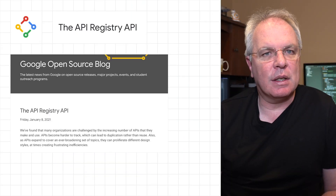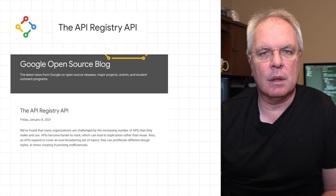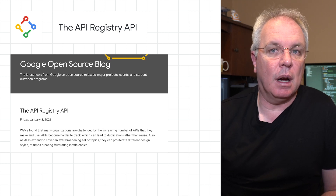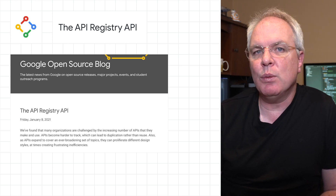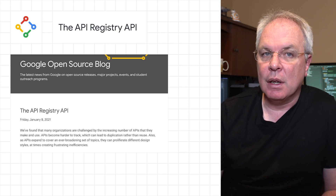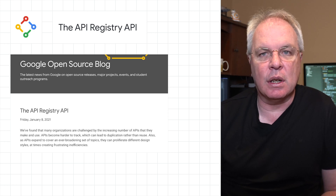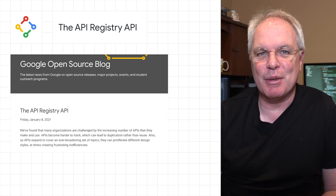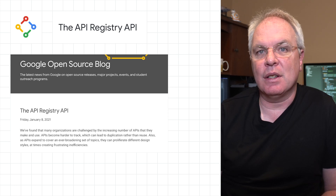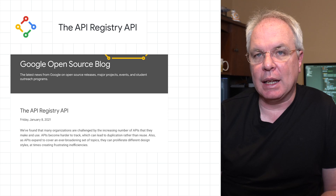Many organizations are challenged by the increasing number of APIs that they make and use. To address this, we've designed the registry API, which allows teams to upload and share machine-readable descriptions of APIs that are in use and in development. An organized collection of API descriptions can be the foundation for a wide range of tools and services that make APIs better and easier to use — things such as linters, documentation generators, and searchable online catalogues.